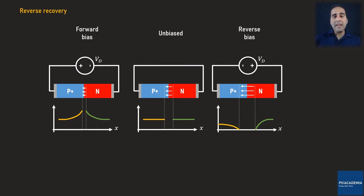Now, imagine that the diode is forwardly biased, and all of a sudden I bias it reversely. Of course, before we can get to the reverse biased situation, the diode has to pass through the unbiased state. This means that we are dealing with a short off-transient behavior.